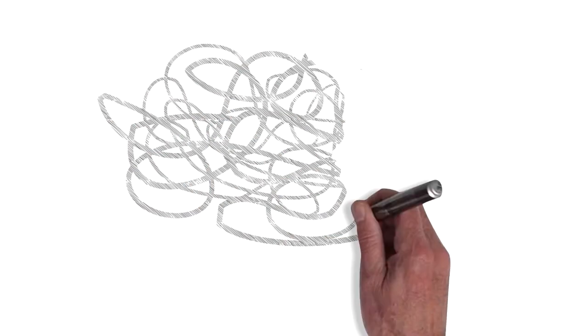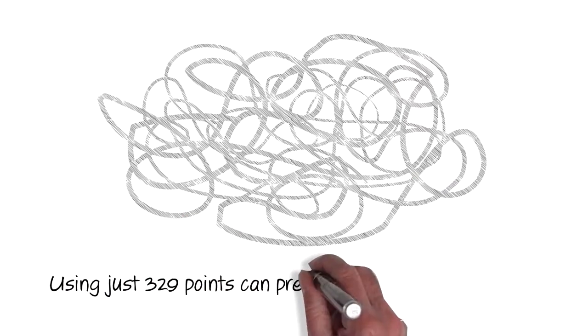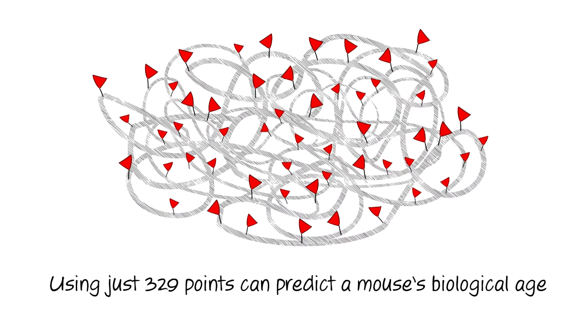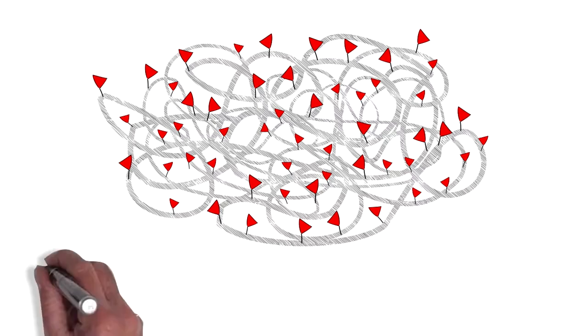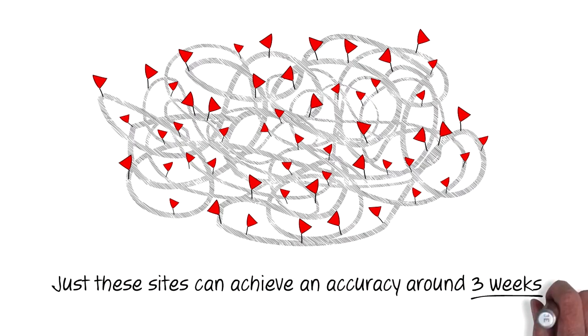The model uses changes at just 329 points out of a possible 23 million places on the DNA. With just these places alone, a mouse's biological age can be predicted with an accuracy around three weeks.